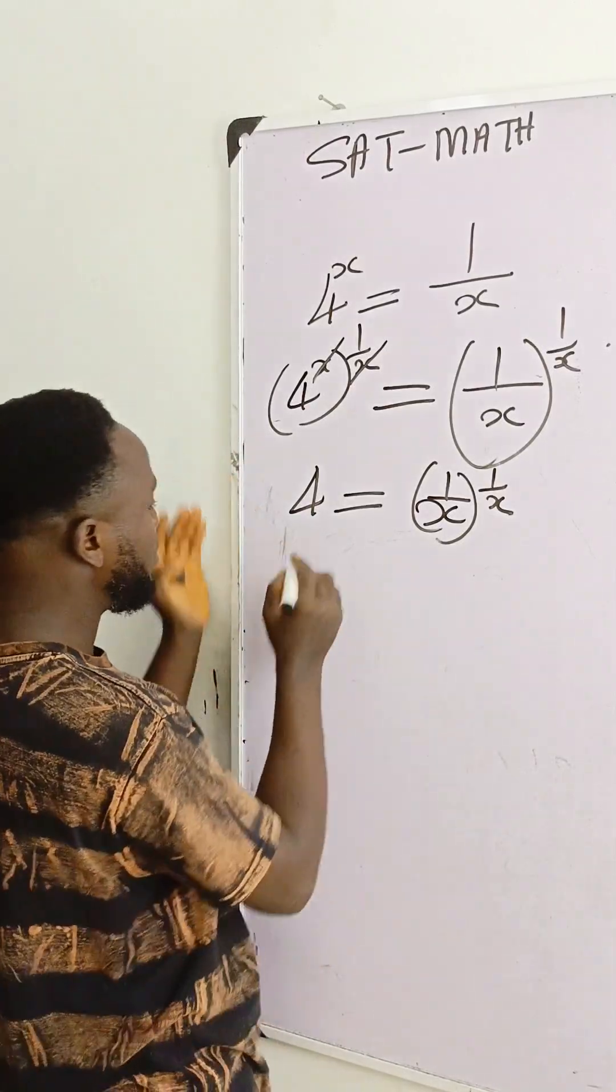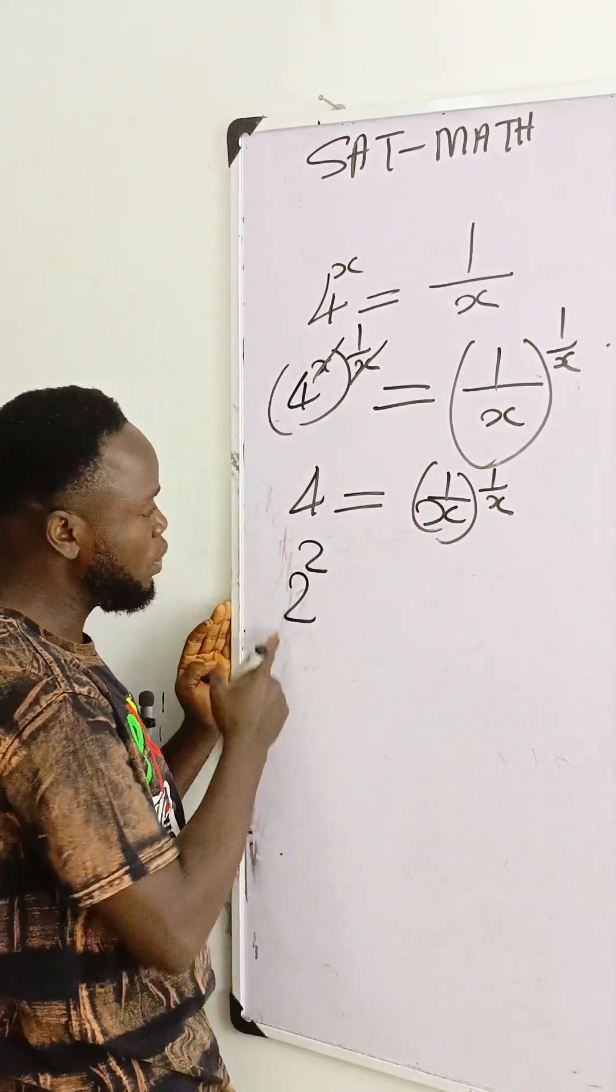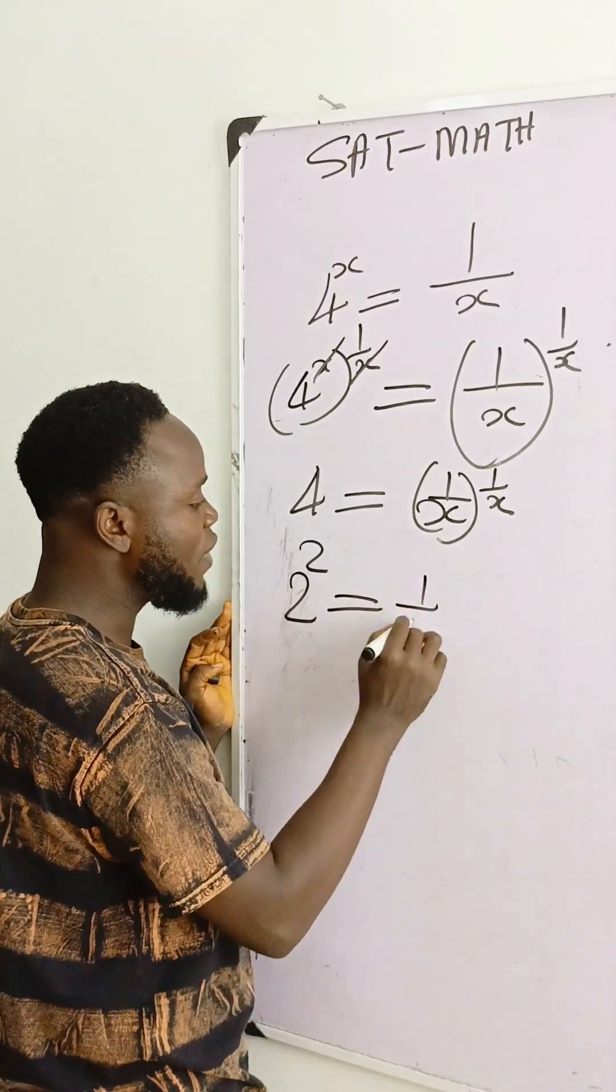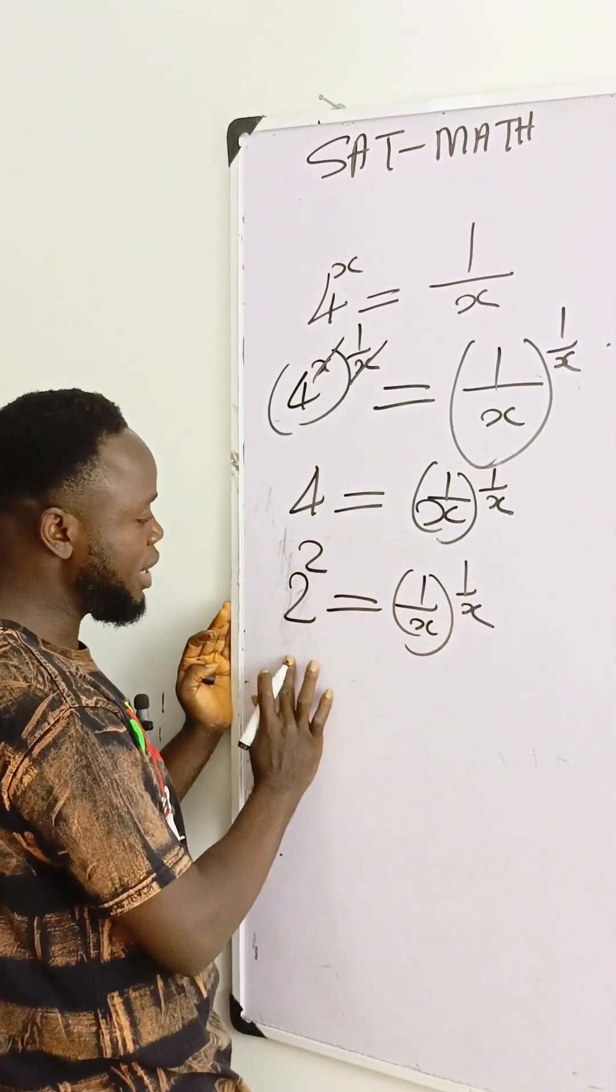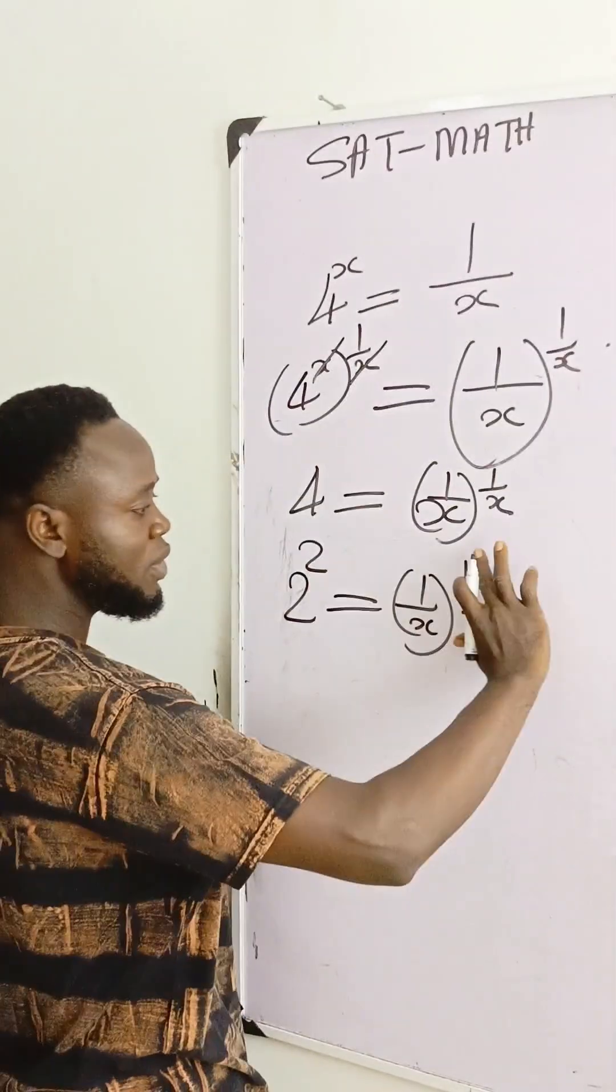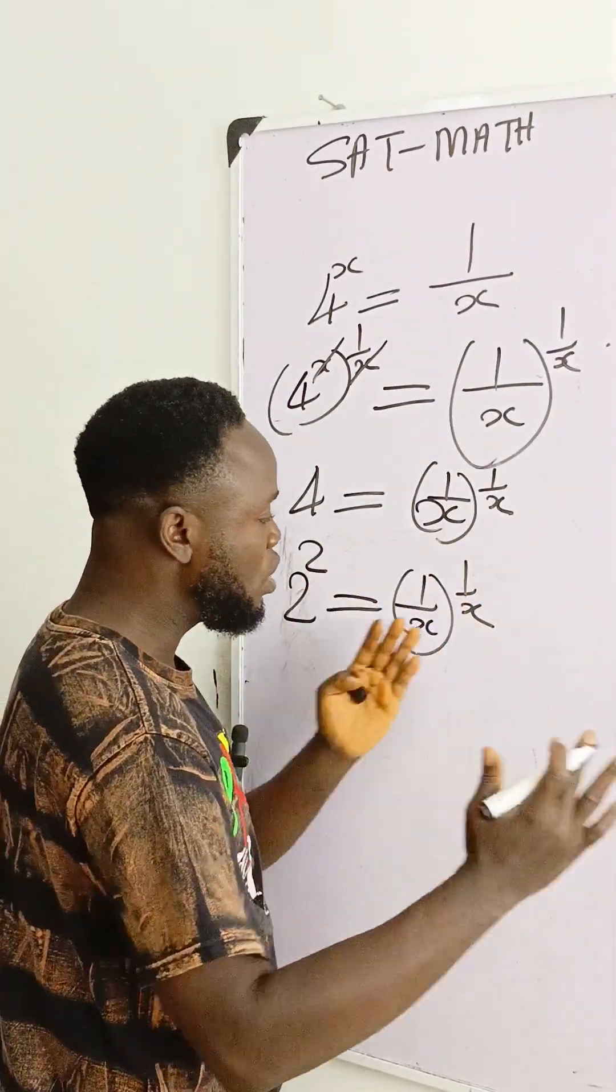And that is quickly 2 raised to power 2, giving you 4 is equal to (1/x)^(1/x). You can see exponent base equal, exponent base equal. So we do what we call comparison.